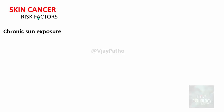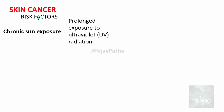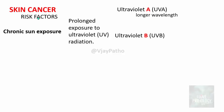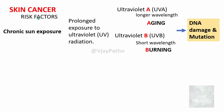The most important risk factor for skin cancer is chronic sun exposure — prolonged exposure to ultraviolet radiation over many years, even decades. There are two types of UV rays: UVA (longer wavelength) and UVB (shorter wavelength). Remember: A for aging — UVA is responsible for aging; B for burning — UVB causes burning and tanning. Whether UVA or UVB, both can cause DNA damage and mutation.